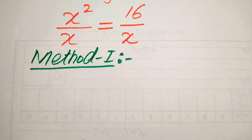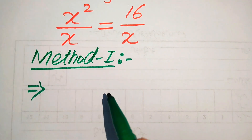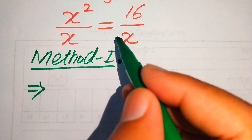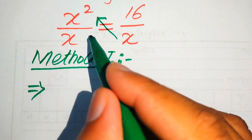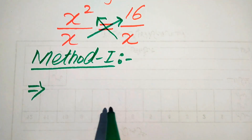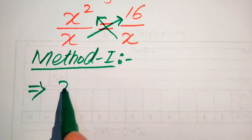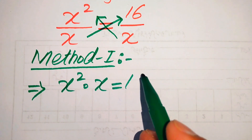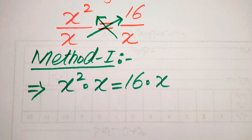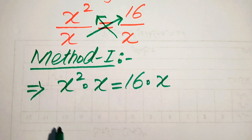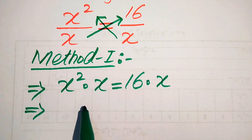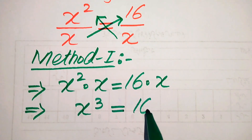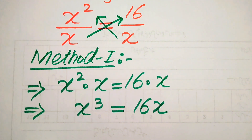In the first method we just need to cross multiply the terms. We multiply x with this x and we multiply this x with this x. So x times x equals x squared, and x squared multiplied by x equals x cubed. And 16 times x equals 16x.